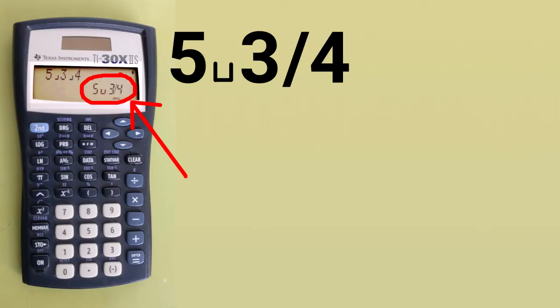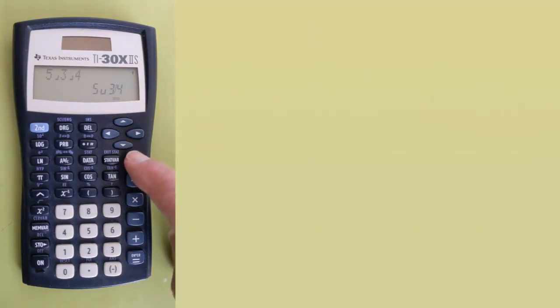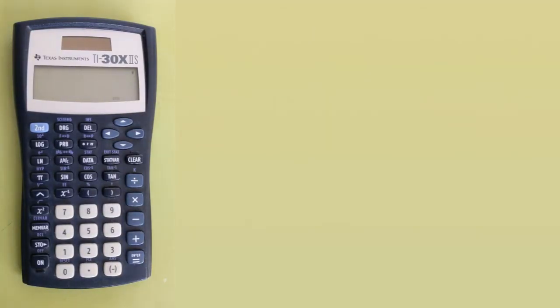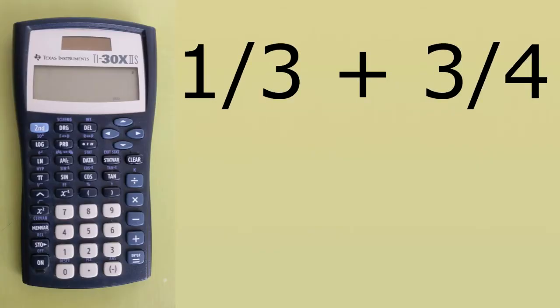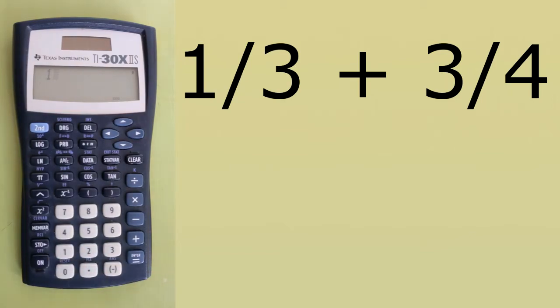I'll clear the screen by pressing the clear button. Let's add two fractions — we will add 1 third plus 3 fourths. Enter a 1, press the fraction button, enter a 3. That is 1 third.